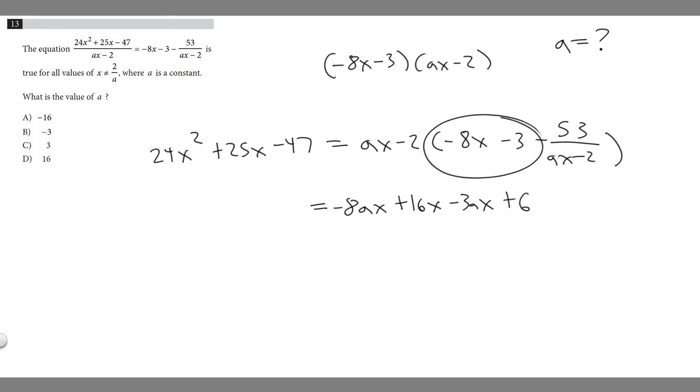And then that only dealt with this part. So we got to do this part, right? So the minus 53 over ax minus 2. And so basically when we multiply that it's just going to cancel, right? So that would cancel with the ax minus 2. So we just have minus 53.